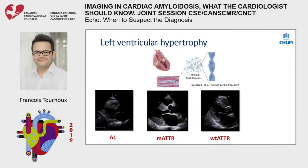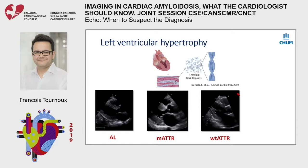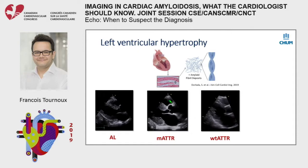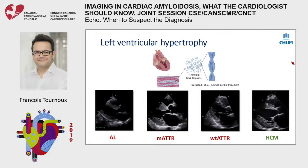Left ventricular hypertrophy is expected in cardiac amyloidosis. It can be very mild, like in patients with V-type ATTR amyloidosis where disease progression is very slow — wall thickness only 12 to 13 millimeters. Or you can have severe hypertrophy. There are no specific anatomical features to distinguish this hypertrophy from other causes by texture alone.